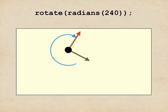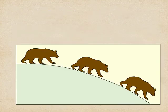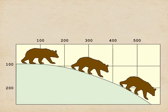Let's take a look at how to use rotate to draw a bunch of bears walking down a hill. Here's the picture I would like to make. Three bears walking down a hill. To help me plan, I draw my usual grid behind the picture where each big box is 100 pixels in each direction.